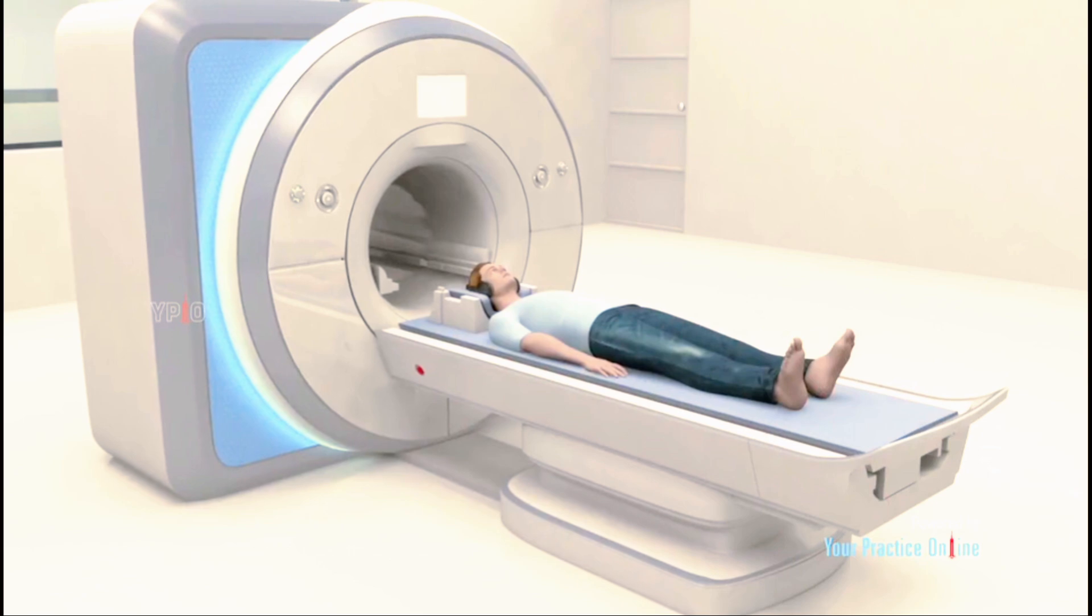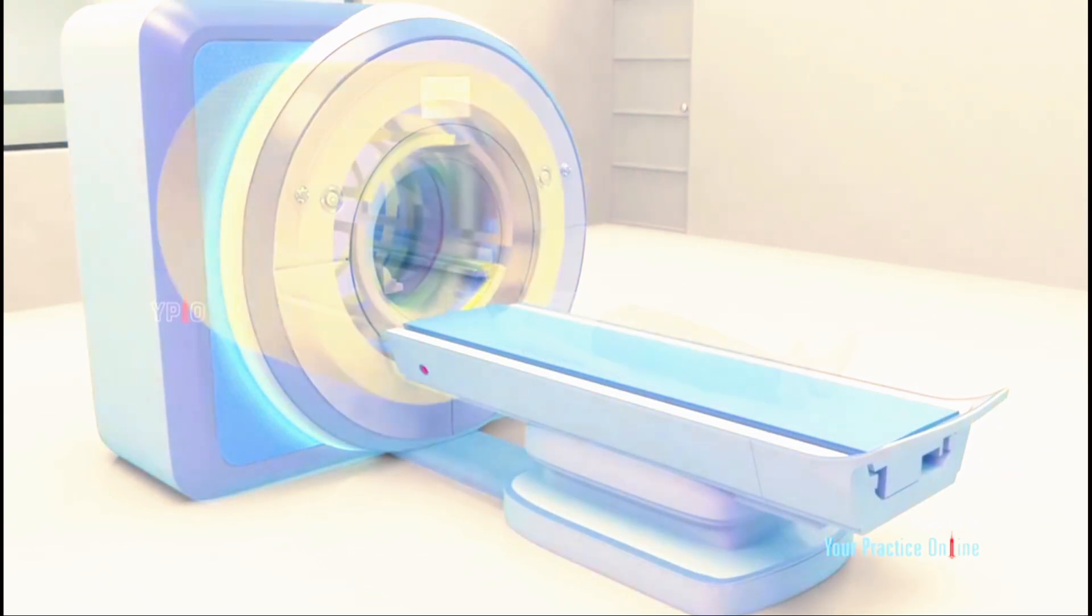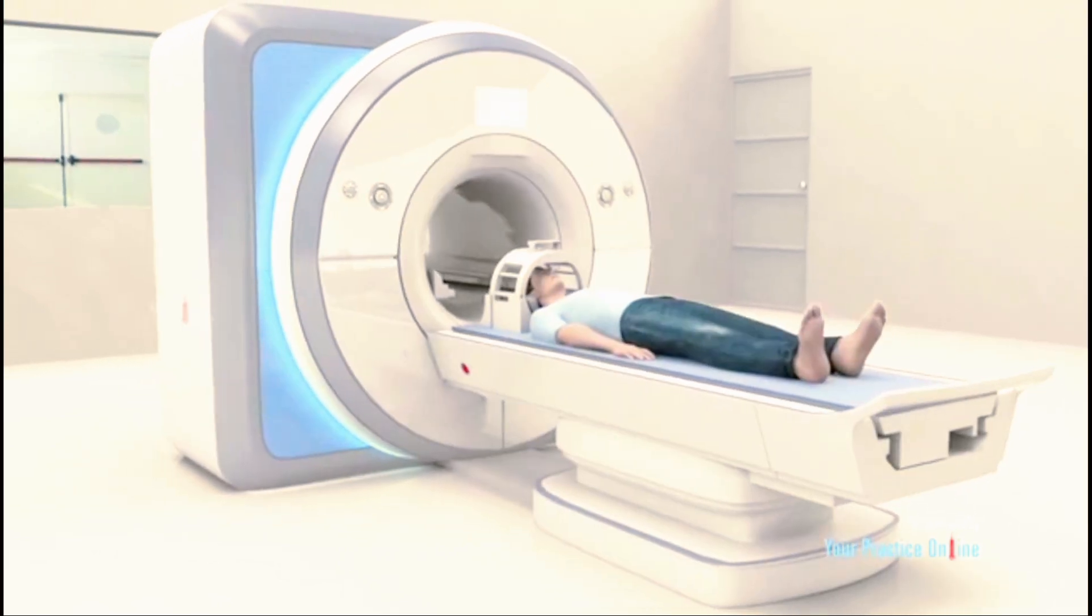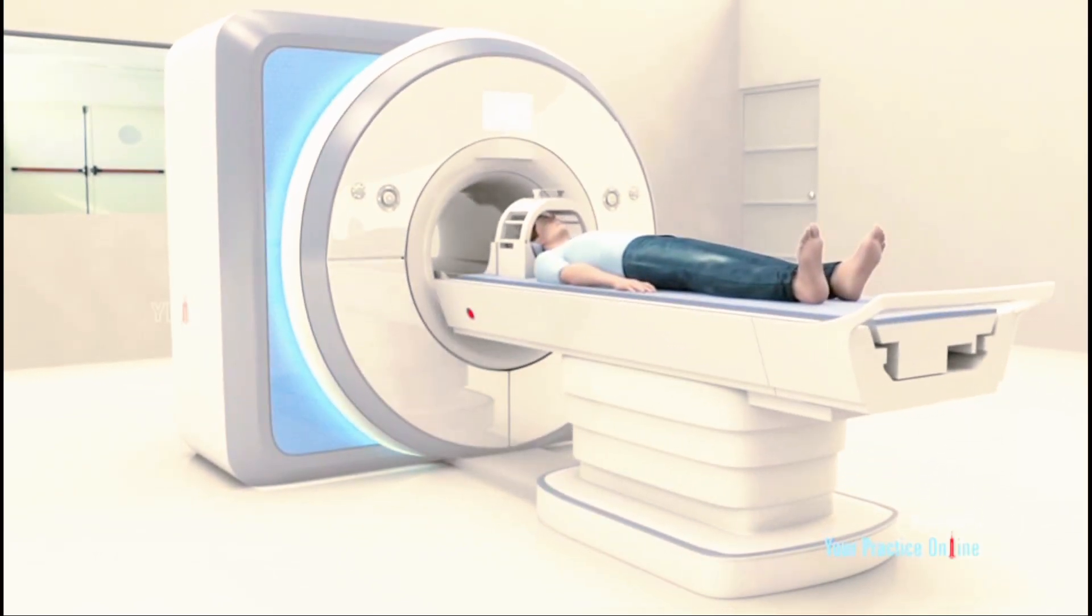A typical MRI machine is a tunnel-shaped tube with a table that slides through it, with both ends open. It is surrounded by a strong magnet. You are instructed to lie on your back on the sliding table that will move into the open tube.